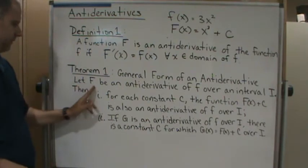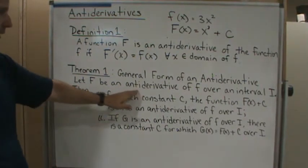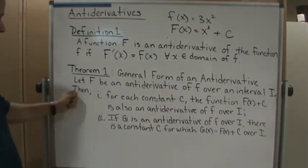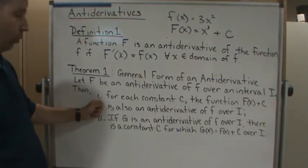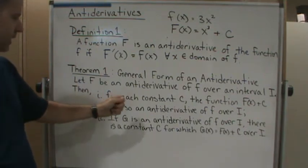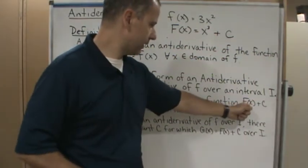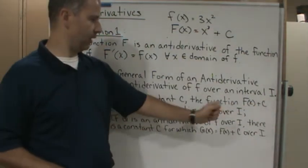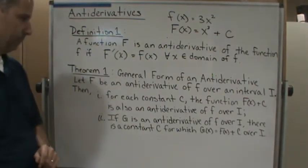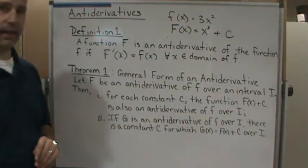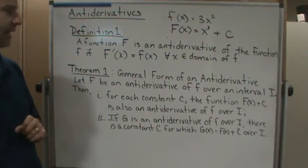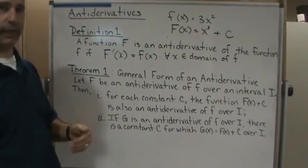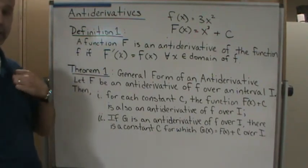So, the theorem says that let F, capital F, be an antiderivative of f over an interval I. Then, one, for each constant c, the function capital F(x) plus c is also an antiderivative of f over I, meaning I can add or subtract any constant from the antiderivative, and it will still be an antiderivative of f over the interval I.